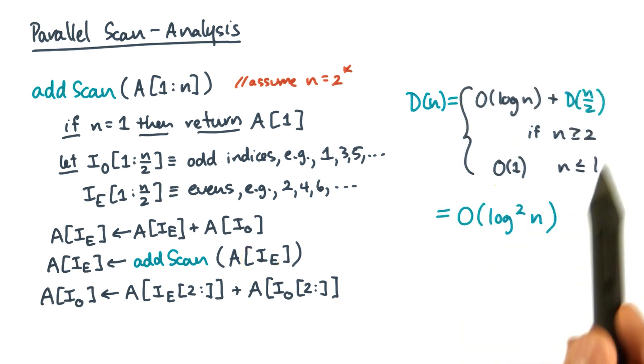Putting that together, here's what the recurrence might look like. If you solve the recurrence, you will get O of log squared n. Again, the master theorem makes solving it quick and easy.